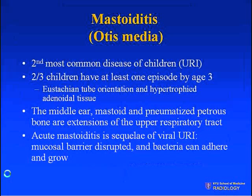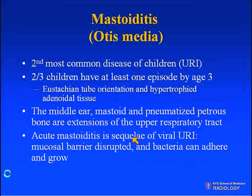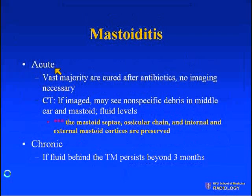Briefly about mastoiditis and otitis media: this is the second most common disease of children after upper respiratory infections. Two-thirds of children have at least one episode by age three. This is felt to be secondary to the horizontal orientation of the eustachian tube and hypertrophic adenoidal tissues. The middle ear, mastoid, and pneumatized petrous bones are considered extensions of the upper respiratory tract. Acute mastoiditis is typically the sequela of a viral URI, as the mucosal barrier is disrupted and microorganisms can then adhere and grow.